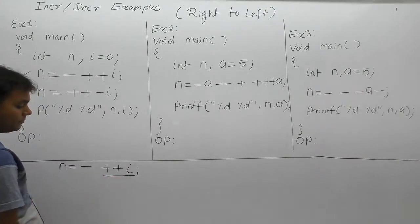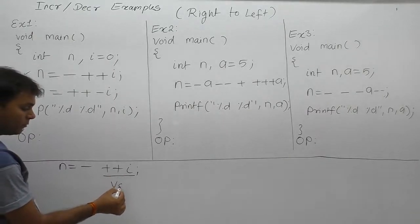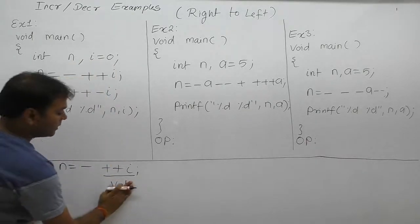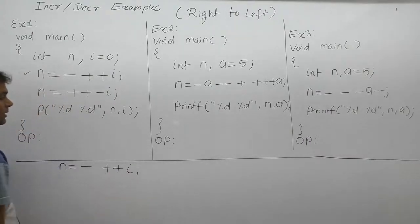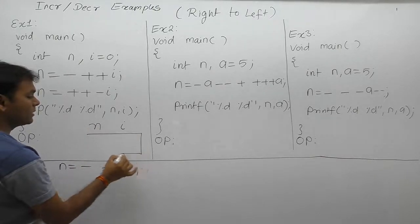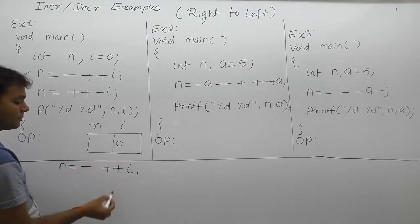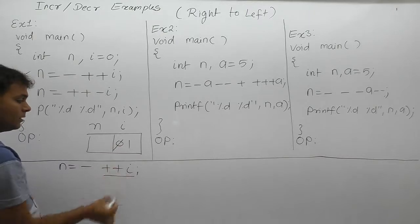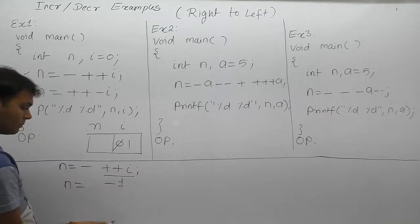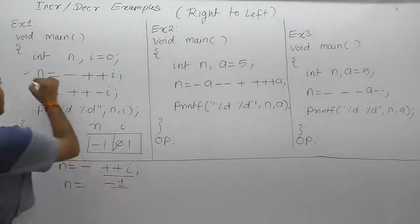After applying plus-plus, replace with the value. The initial value of i is zero. Memory allocation for variables n and i: initial value of n is garbage, i is zero. First, increment i — i becomes 1, then replacement gives the value 1. Now the expression becomes n = -1. Finally, n gets assigned minus one.